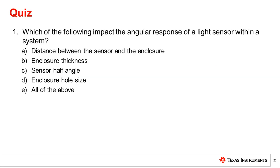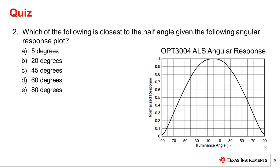Question 1: Which of the following impact the angular response of a light sensor within a system? The correct answer is E, all of the above. All the choices shown have been discussed in this video and will impact the angular response of a system.